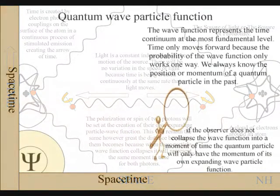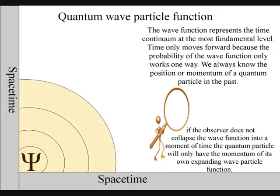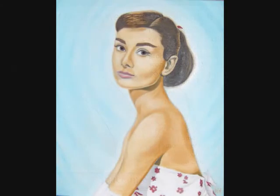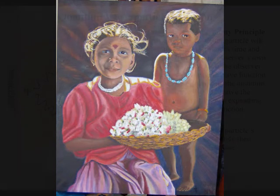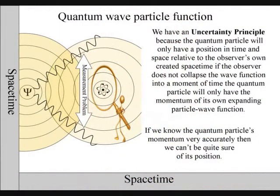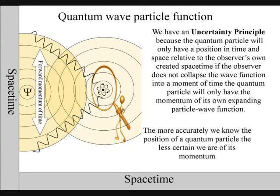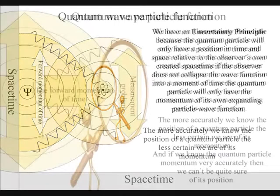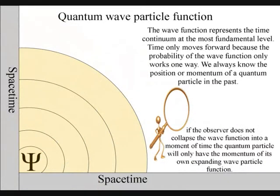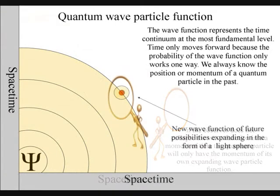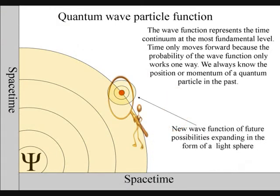If the observer does not collapse the wave function, the quantum particle will only have the momentum of its own particle wave function. At a fundamental quantum level, the observer is the observed within his or her own created space-time. Therefore, the more accurately we know the position of a quantum particle, the less certain we are of its momentum, and if we know its momentum very accurately, then we can't be quite sure where it is. This is because to observe the quantum particle, we create a photon-electron coupling, collapsing the particle wave function into a moment of time and space that is part of the observer's own created space-time.